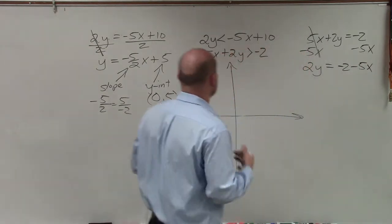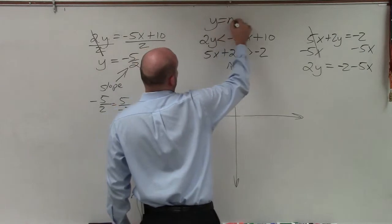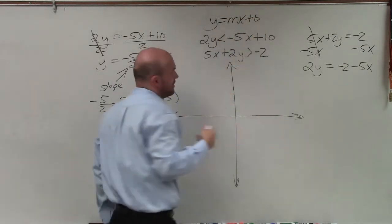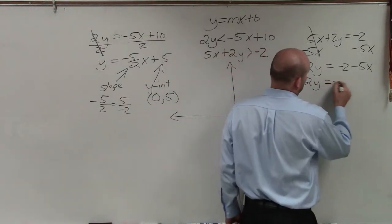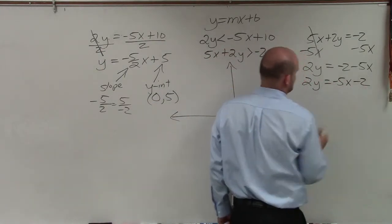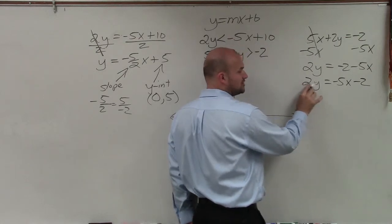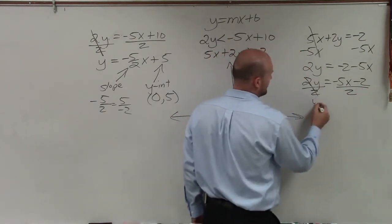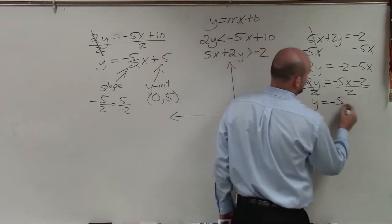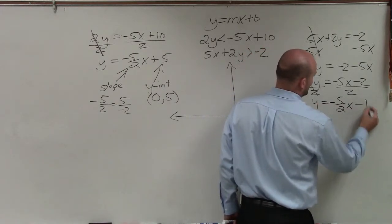Now we always want to rewrite that in slope-intercept form, y equals mx plus b. So we want to write our variable before our constant. So I'll rewrite this as 2y equals negative 5x minus 2. Now what I'm going to do is undo multiplication by 2 by dividing by 2 on both sides. Therefore, I get y equals a negative 5 halves x minus 1.